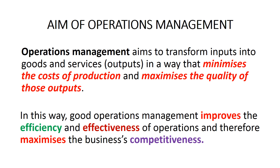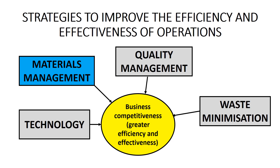By minimizing the costs of production and maximizing the quality of outputs, good operations management improves the efficiency and effectiveness of operations and therefore maximizes the business's competitiveness. There are four types of operations management strategies: technology, materials management, quality management, and waste minimization. In this video we will be looking at materials management strategies.